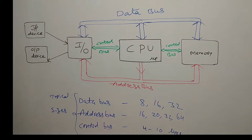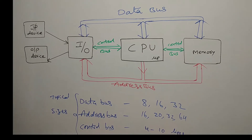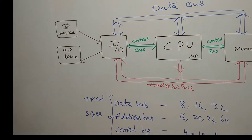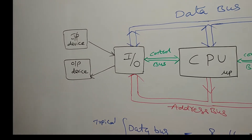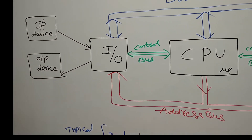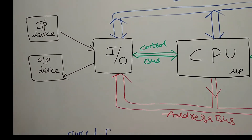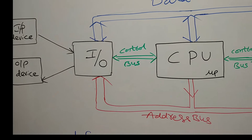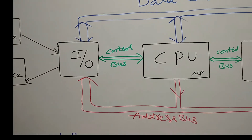The structure of a microcomputer looks like this. The CPU is connected to IO and memory with the help of three buses.